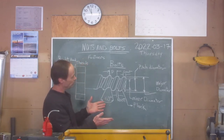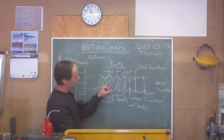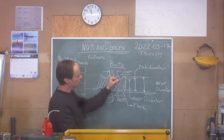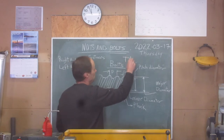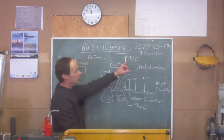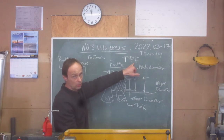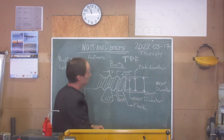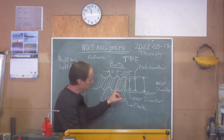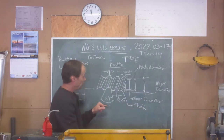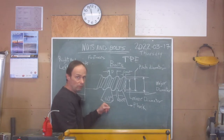Some features and parts of bolts: thread pitch is tooth to tooth — that's the pitch. There is also a term called TPI — threads per inch. The top of a thread is the crest, the bottom is the root, and the side connecting the crest and root is the flank. Most threads you're going to encounter are 60 degrees, with the exception of acme, square, and buttress threads.